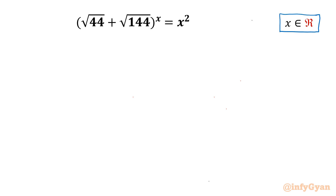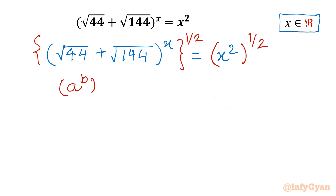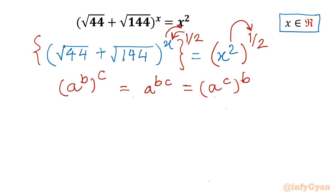Let's get started by writing our equation as: (√44 + √144)^x = x². Now I will raise both sides to the power of one half. I will introduce one exponent law: a^b whole power c is equal to a^(b·c). Further we can write a^c whole power b. So here we will switch the exponents.